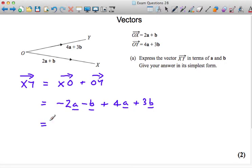Let's simplify that. We've got minus 2A plus 4A which is plus 2A, and we've got minus B plus 3B which is plus 2B. So that's the vector XY.